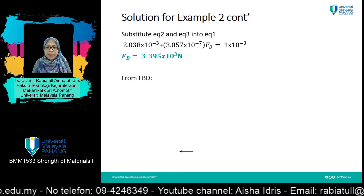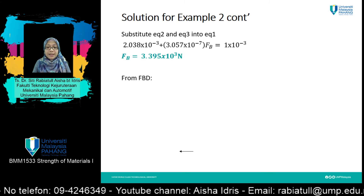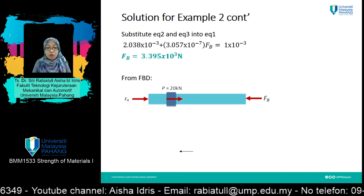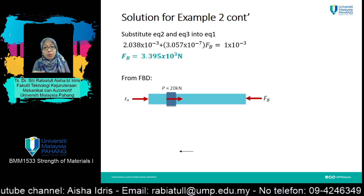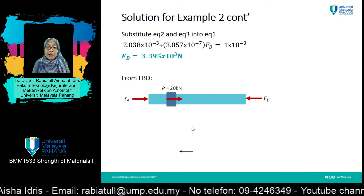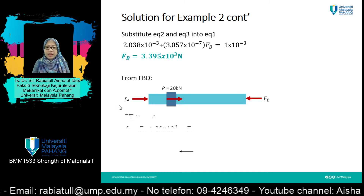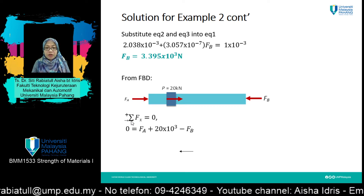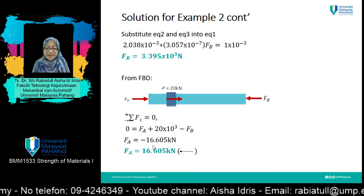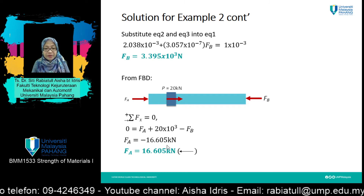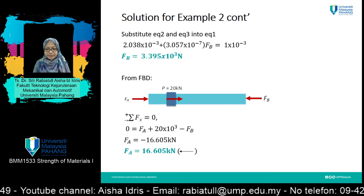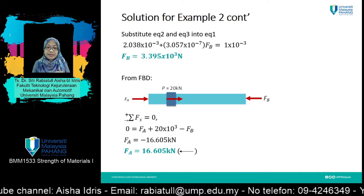The other missing part is the reaction force at point A. To find it, draw the whole free body diagram for the structure. Taking forces in the X direction equals to zero, you will get F_A equals negative 16.605 kilonewton, or the same positive magnitude but acting in the opposite direction. Either answer is acceptable.